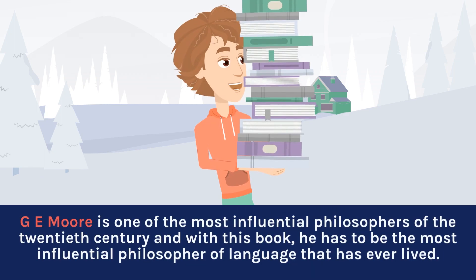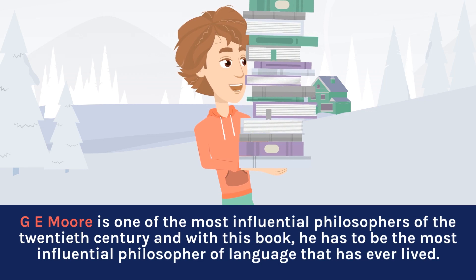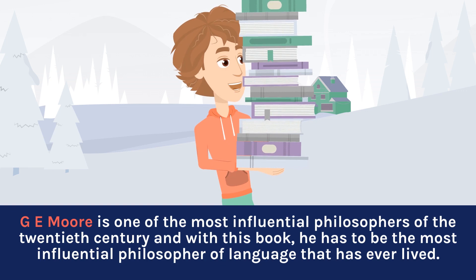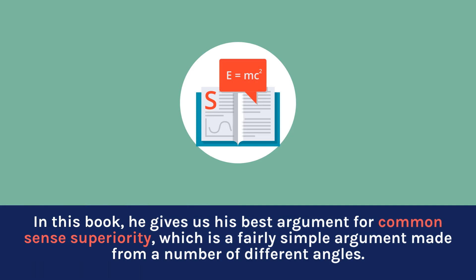G.E. Moore is one of the most influential philosophers of the 20th century, and with this book, he has to be the most influential philosopher of language that has ever lived. In this book, he gives us his best argument for common sense superiority, which is a fairly simple argument made from a number of different angles.